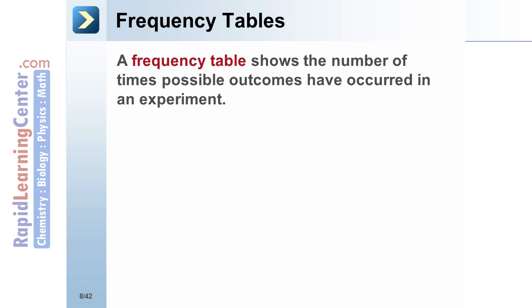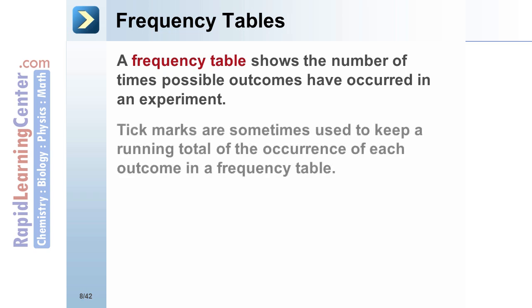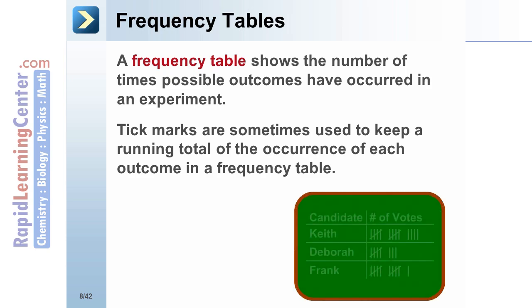Frequency tables: a frequency table shows the number of times possible outcomes have occurred in an experiment. Tick marks are sometimes used to keep a running total of the occurrence of each outcome in a frequency table. For example, a frequency table and tick marks can be used to tally the number of votes each candidate for class president receives.